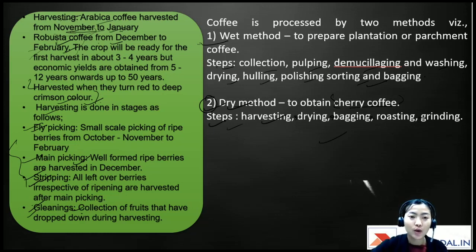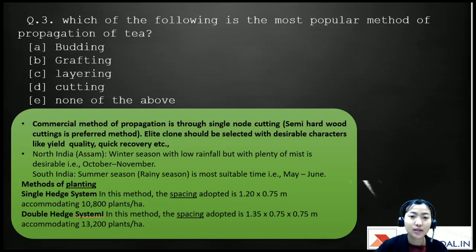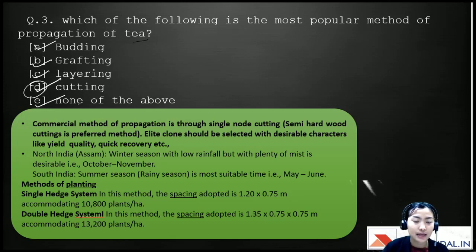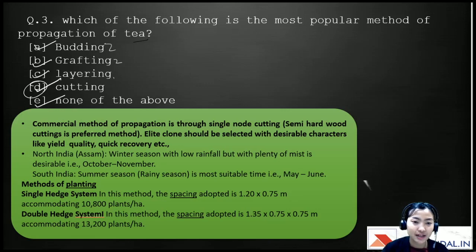The third question: which of the following is the most popular method of propagation of tea? A) Budding, B) Grafting, C) Layering, D) Cutting, E) None of the above. The right answer is cutting. Although all these options are methods of propagation, the most popular and commercial method is through a single-node semi-hardwood cutting.